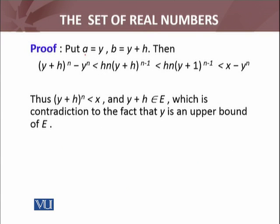Now if I put a = y and b = y + h in the binomial identity I just showed, then (y+h)^n - y^n < hn(y+h)^(n-1), which is less than hn(y+1)^(n-1). This is less than x - y^n, which is positive. Thus (y+h)^n < x.